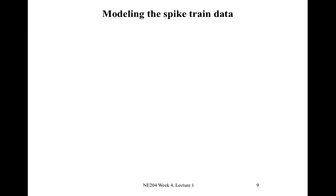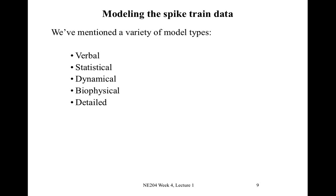We've discussed different types of modeling schemes to understand neural activity, in this case spike train data. The types of models we've mentioned are verbal models, statistical models, dynamical models, biophysical models, and detailed models. What we're going to do this week is focus on the second class of models: statistical models.